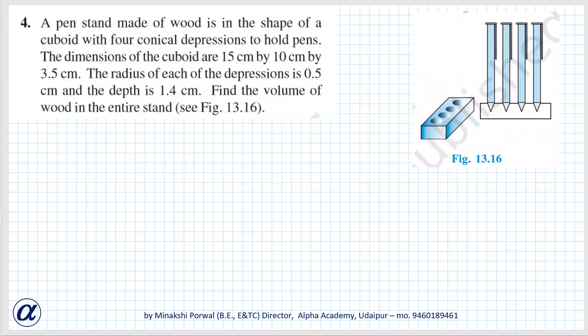Exercise 13.2, Question number 4. A pen stand made of wood is in shape of a cuboid with four conical depressions to hold pens.